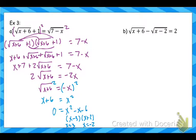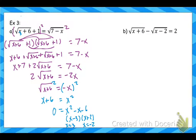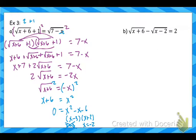Plug both answers back into the original. For x equals 3: 3 plus 6 is 9, square root of 9 is 3, plus 1 is 4. On the right side, 7 minus 3 is 4, square root of 4 is 2. So that does not work — 3 is extraneous. For x equals negative 2: negative 2 plus 6 is 4, square root of 4 is 2, plus 1 is 3. On the right, 7 minus negative 2 is 9, square root of 9 is 3. That works, so x equals negative 2 is the solution.